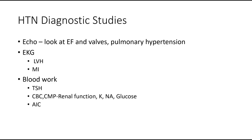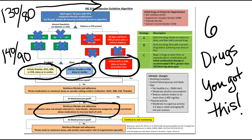Going back to the algorithm, there are six drug classes you need to know for the current guidelines: thiazides, ACE inhibitors, ARBs, calcium channel blockers, beta blockers, and aldosterone antagonists. Six drugs — you've memorized way more than six drugs in your career, so you'll have no problem getting a good handle on this.